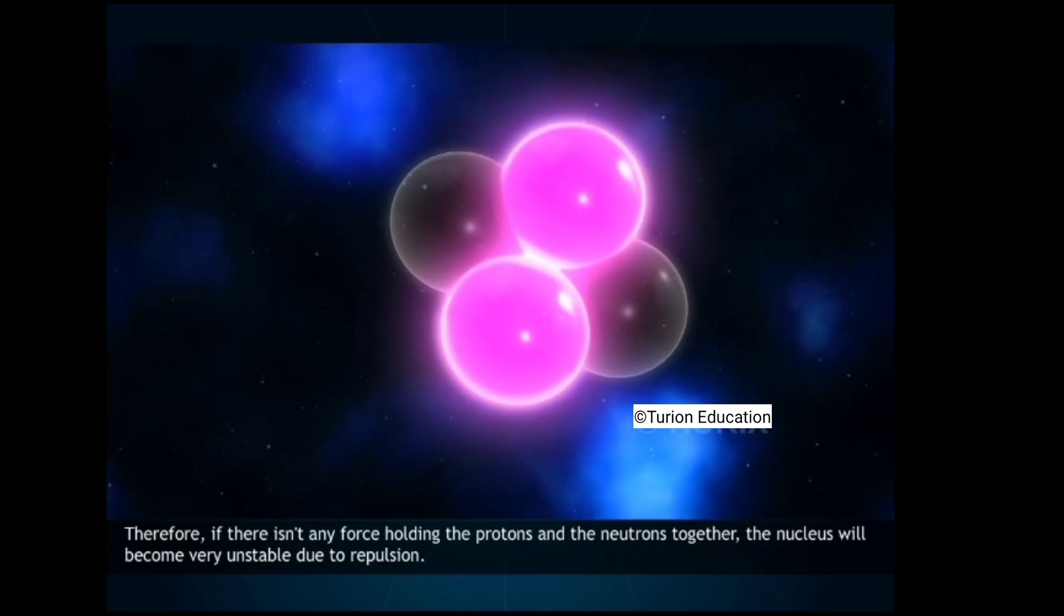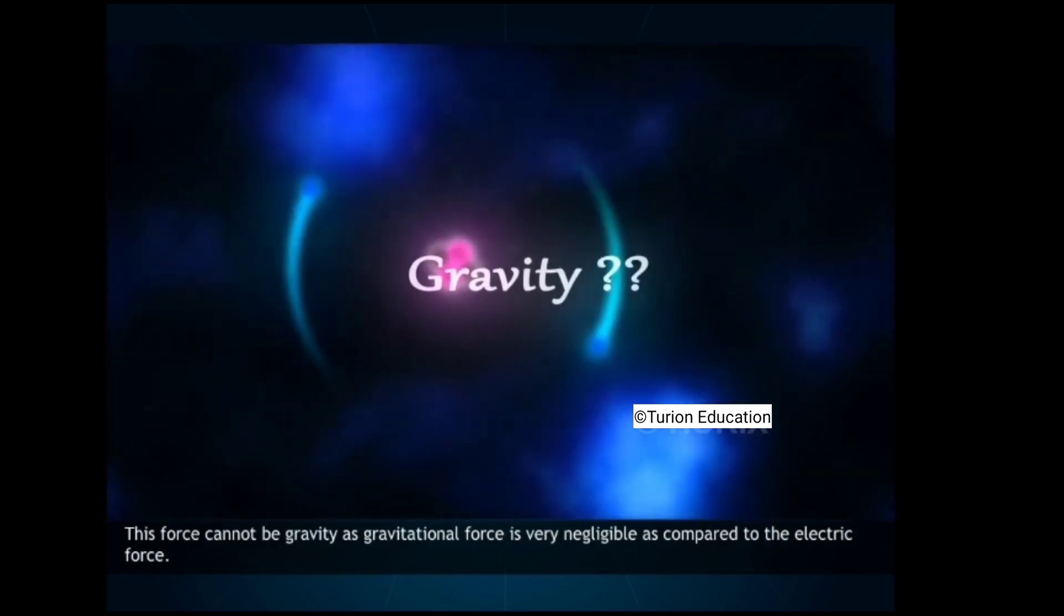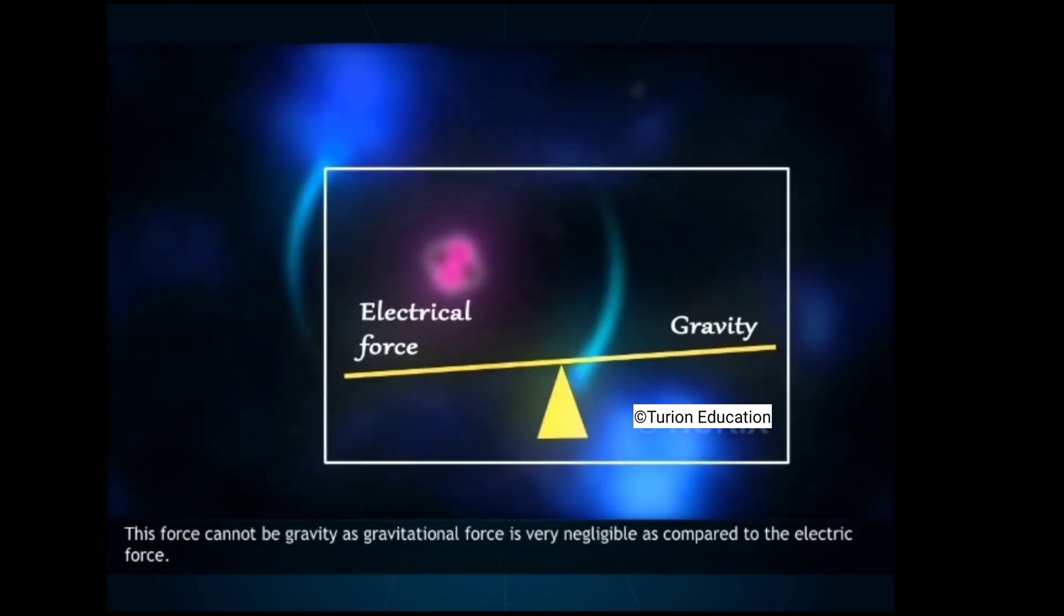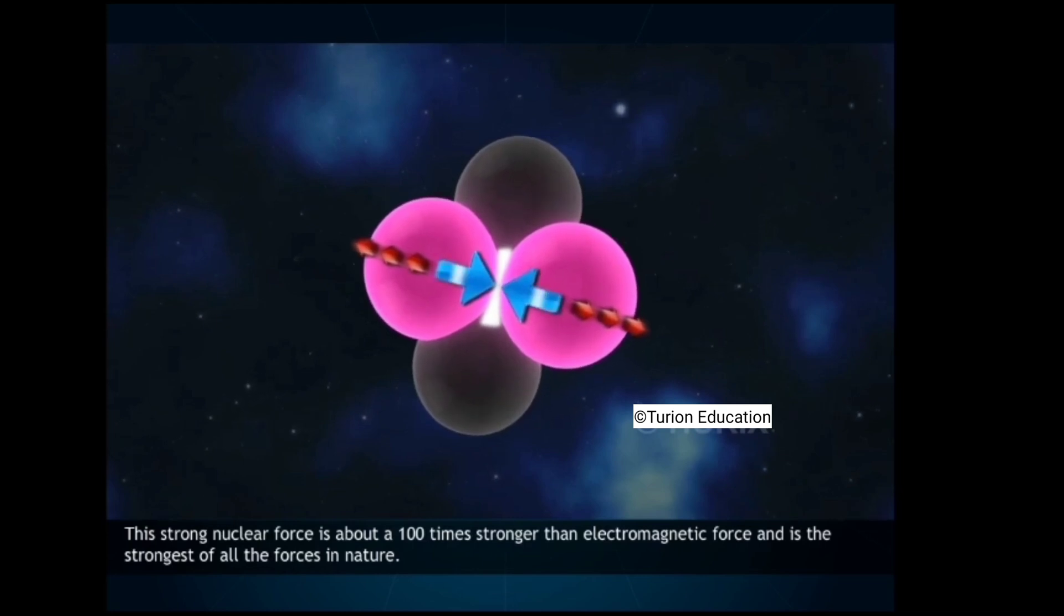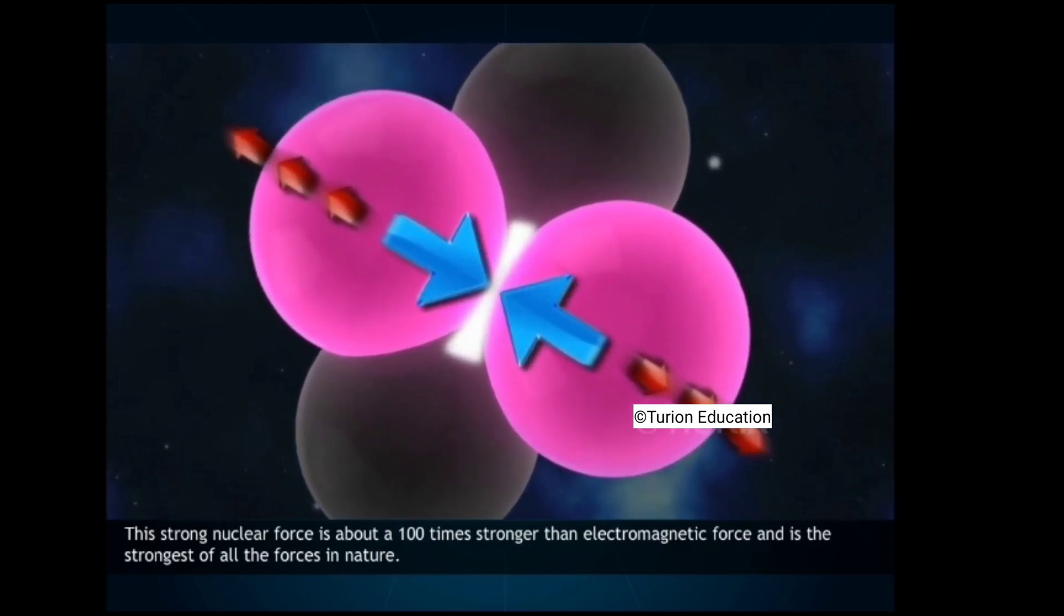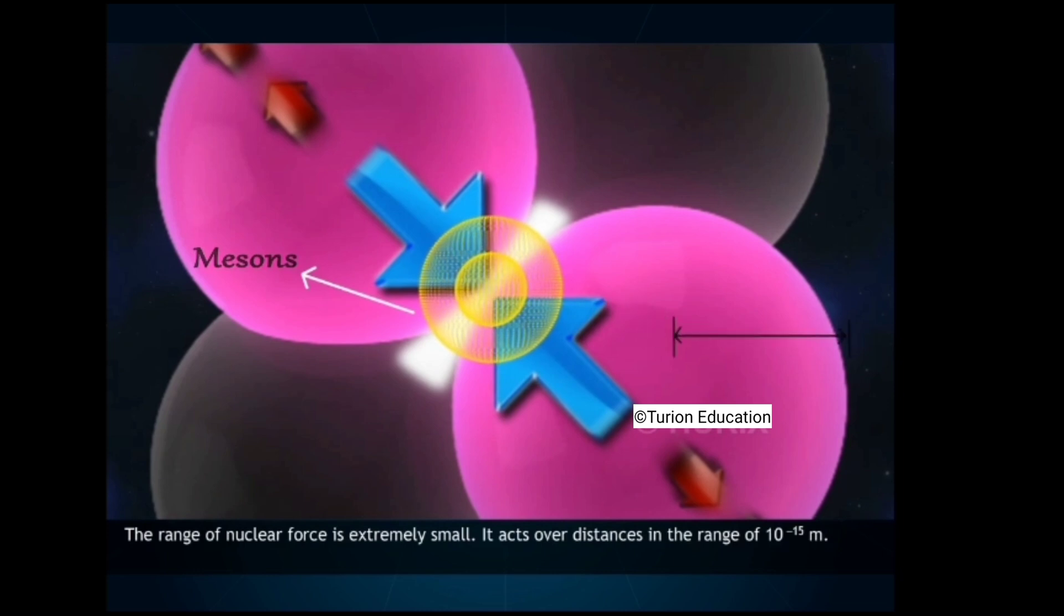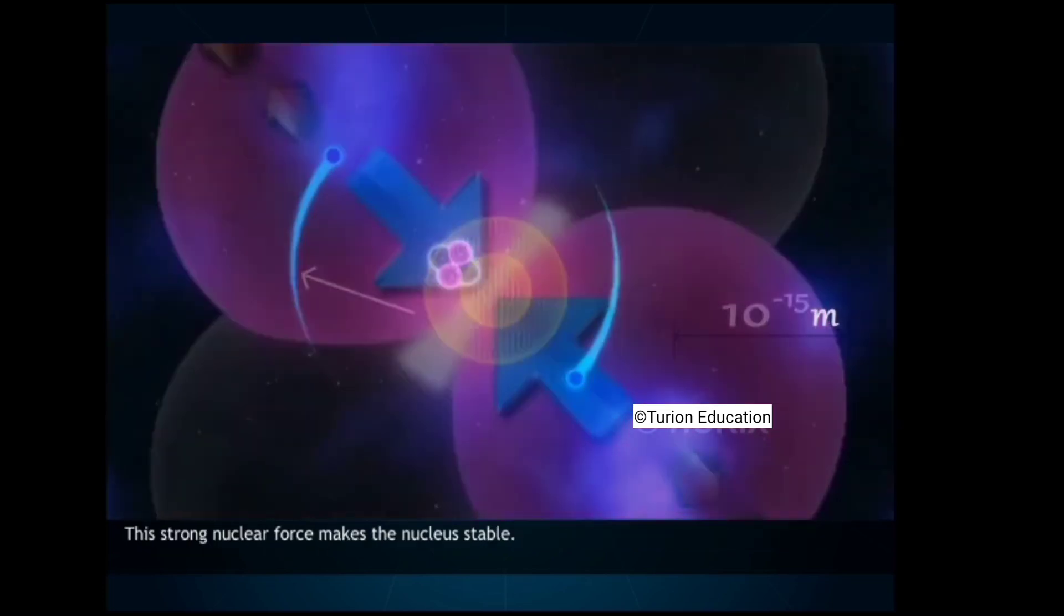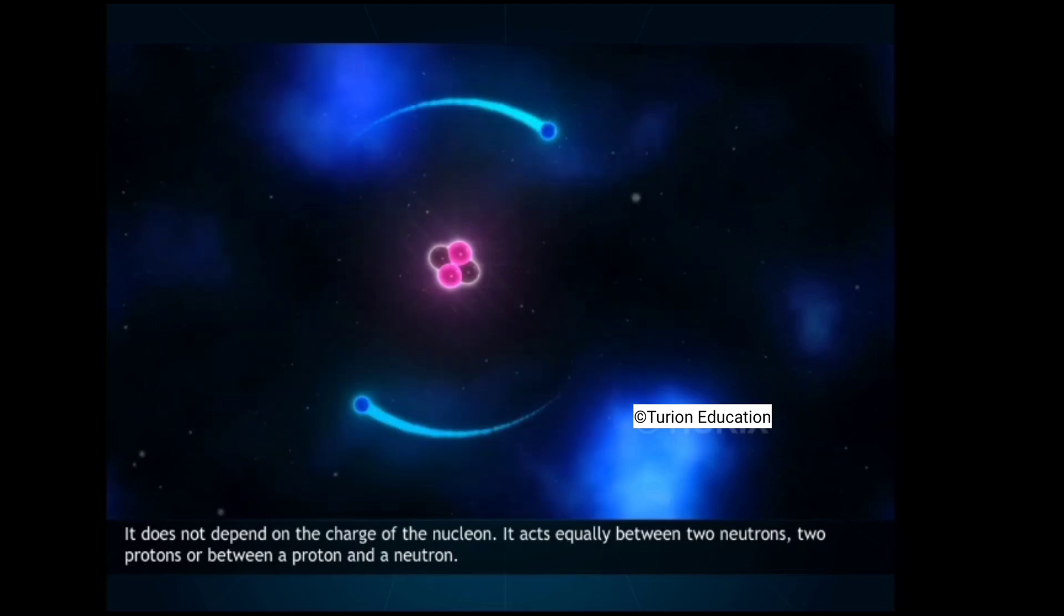Strong nuclear force. In the nucleus, if there is no strong force holding the protons and the neutrons together, the nucleus will become very unstable due to repulsion. This force cannot be gravity as gravitational force is very negligible as compared to the electric force. This strong nuclear force is about 100 times stronger than electromagnetic force and is the strongest of all the forces in nature. The strong nuclear force is created between nucleons by the exchange of particles called mesons. The range of nuclear force is extremely small. It acts over distances in the range of 10 raised to minus 15 meters. The strong nuclear force makes the nucleus stable. It does not depend on the charge of the nucleon. It acts equally between two neutrons, two protons or between a proton and a neutron.